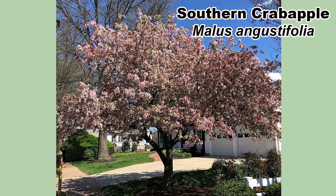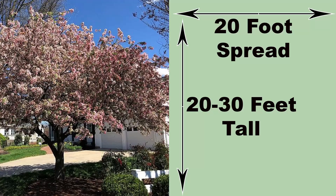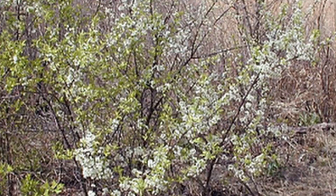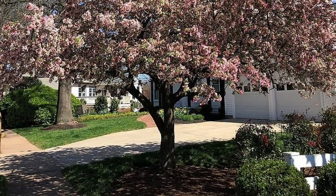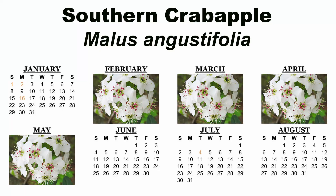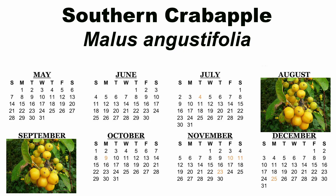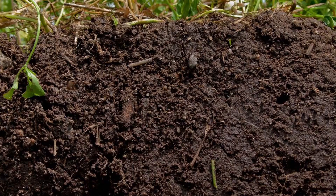First up is the southern crab apple, Malus angustifolia. As its name suggests, this species is found mainly in the southeastern United States. It can grow 20 to 30 feet tall with up to a 20-foot spread, but it is often smaller. While it will sucker to form a thicket if allowed, it is easily grown as a specimen tree. The white to pink blooms appear from February to May depending on location, and the sour three-quarter to one-inch gold to yellow fruits ripen in August and September.